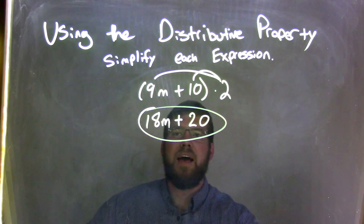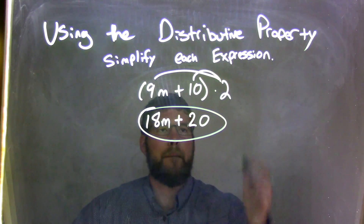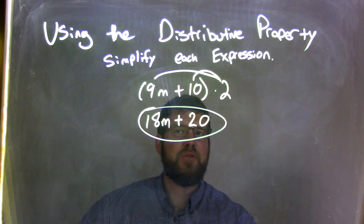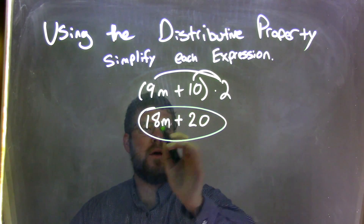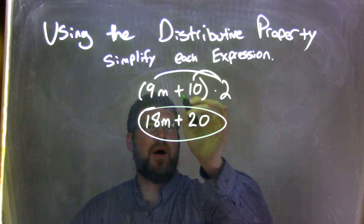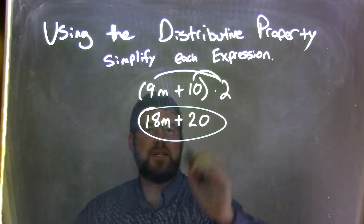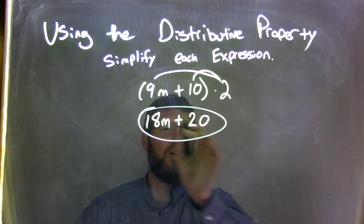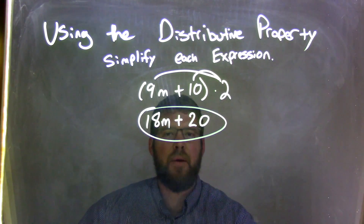Let's recap. We have 9m plus 10 in parentheses, multiplied by a 2. We had to distribute the 2 times the 9m first to get 18m, and then we brought down that plus sign, and then we had the 2 times the 10, which is 20. Our final answer, because these are not like terms and we cannot combine them, is 18m plus 20. Thank you.